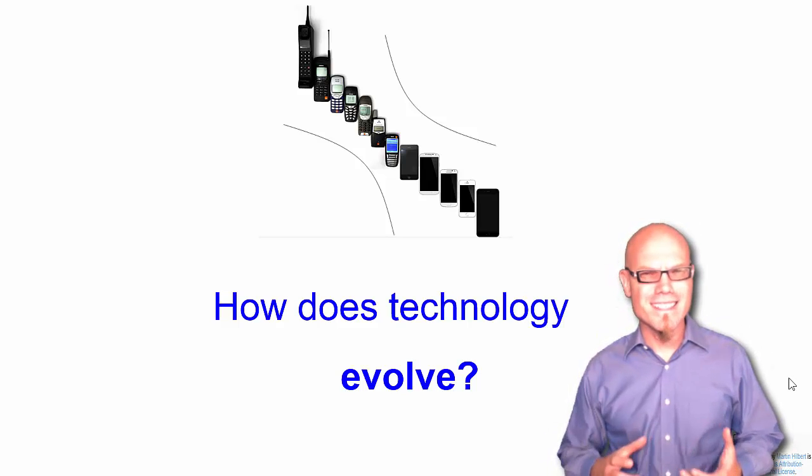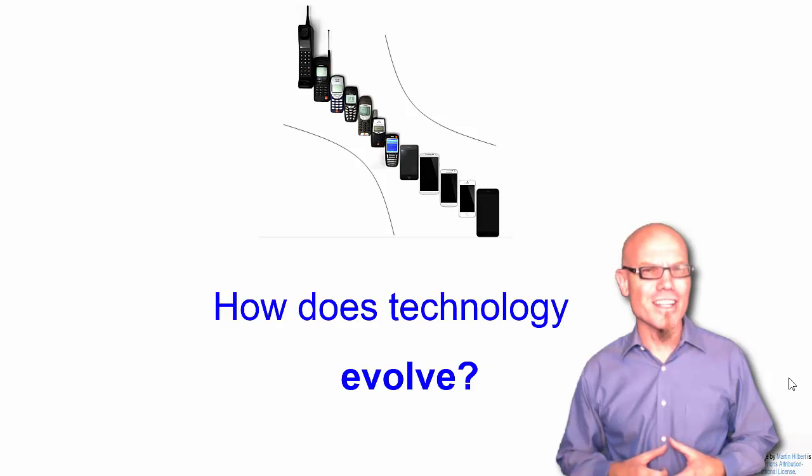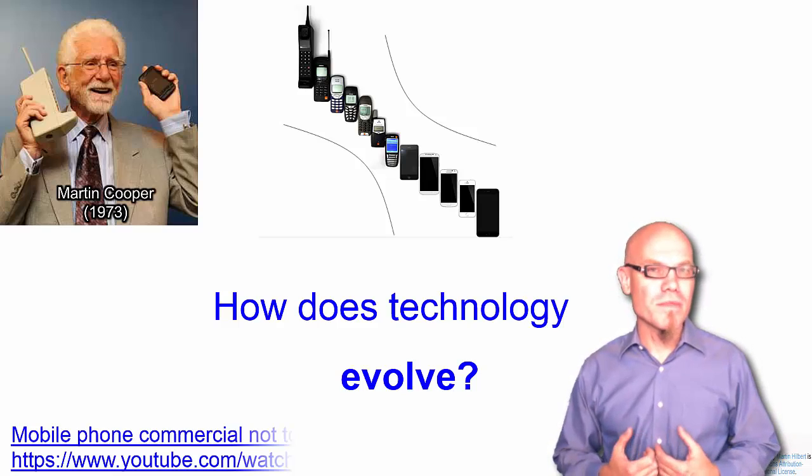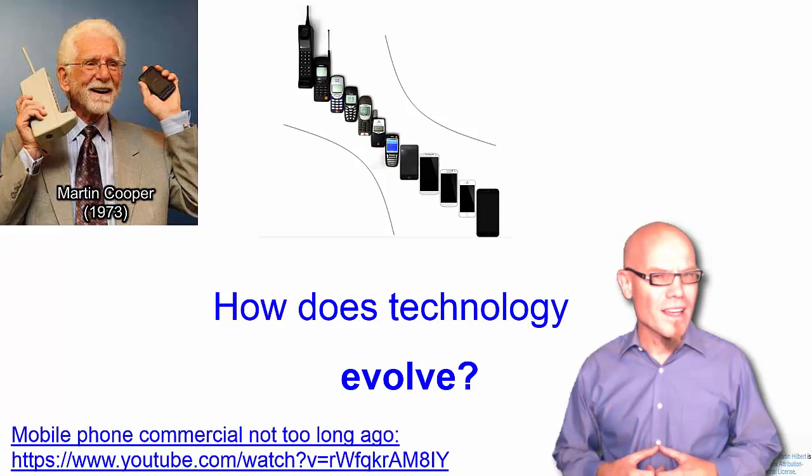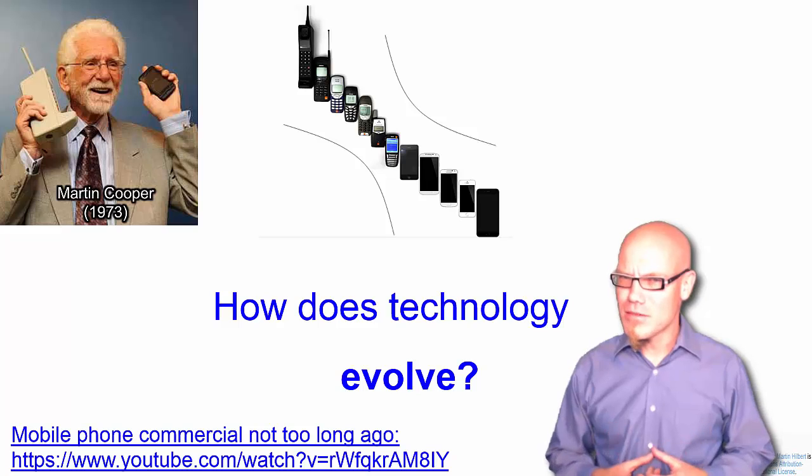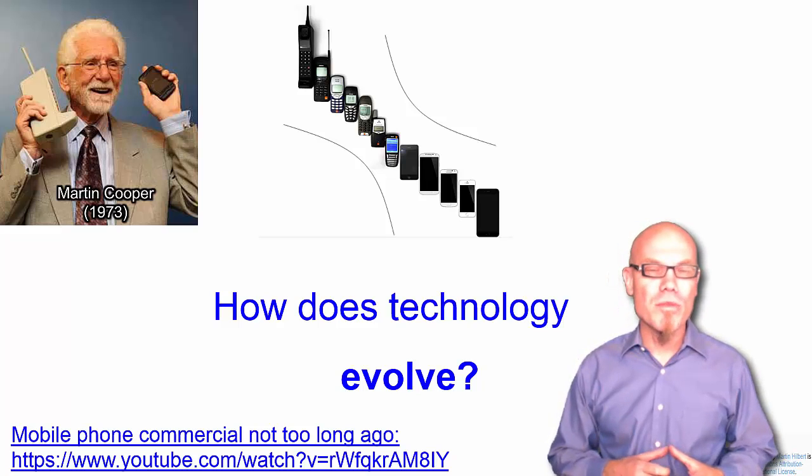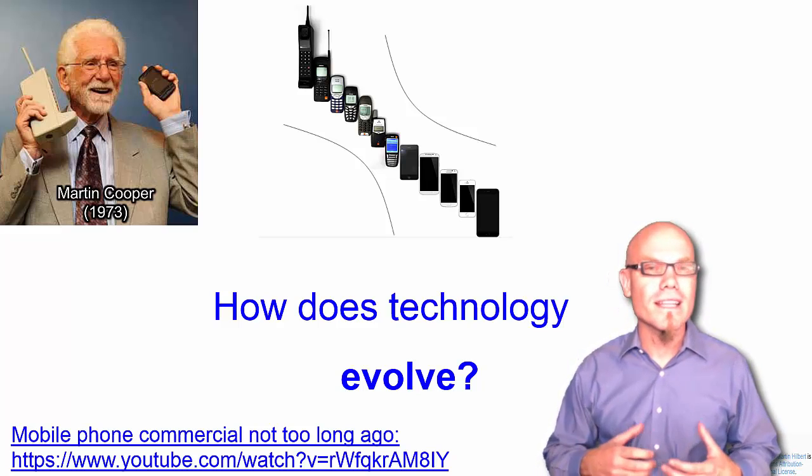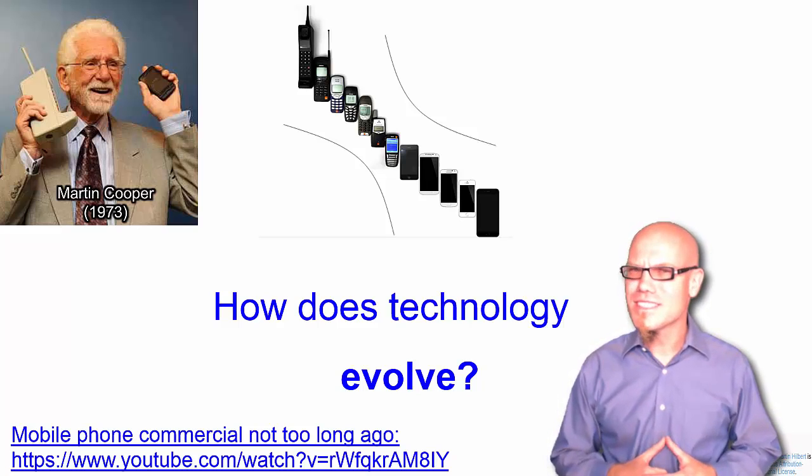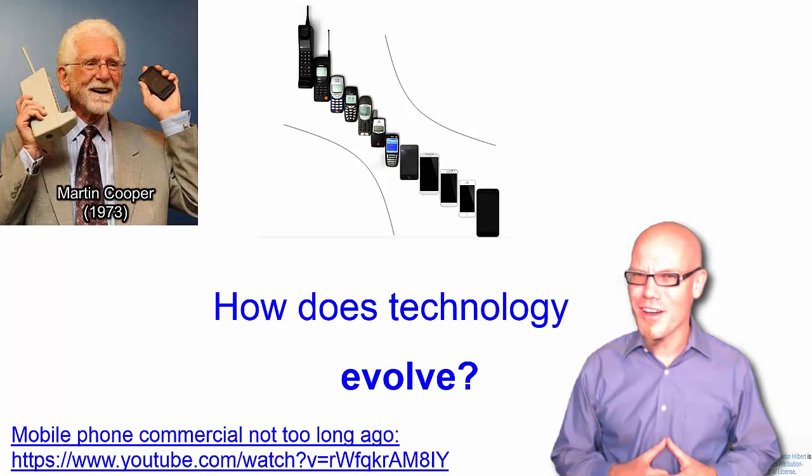Now, technology does not only exist in a static manner. Technology obviously also evolves. For example, from the time when Mr. Martin Cooper invented the mobile phone in 1973 at a company called Motorola, the mobile phone has evolved a lot and extremely rapidly. For example, check out this commercial which is not from too long ago.